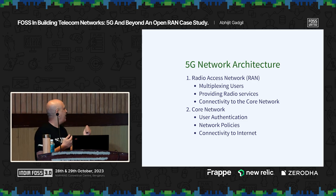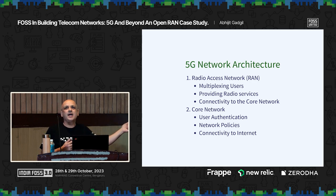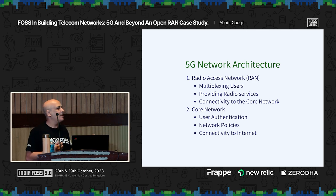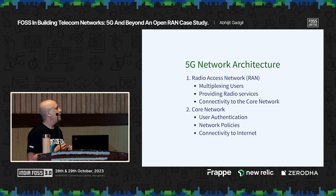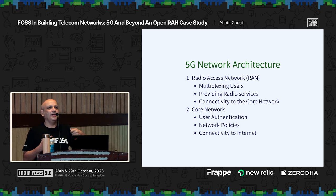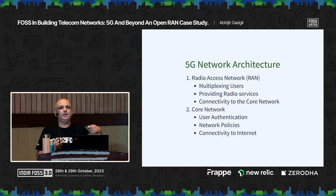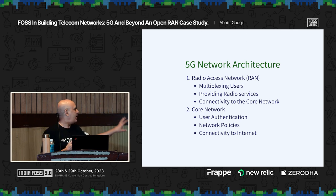Looking at the functions provided by the radio access network: on the radio side it's a shared resource, so you need to multiplex users on the radio network — that is provided by the RAN. It also provides connectivity to the core network and handles handoff. For example, when you are traveling on the metro you don't experience a loss of connection because a seamless handover happens from one tower to another — some of that functionality happens in the RAN.